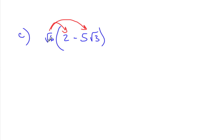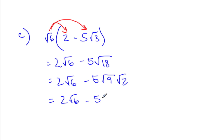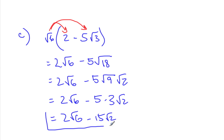So when I do that, 2 times root 6 — there's a 1 in front, so that ends up being just 2 root 6. I can't multiply inside the root for that term. When I do the second bit, I get negative 5 times the square root of 6 times 3, which is root 18. I have to ask myself, can I simplify root 18? The answer is yes — that becomes 9 and 2, with 9 from that special list. So I get 2 root 6 minus 5 times 3 root 2, which is 2 root 6 minus 15 square root 2. And that is our final answer.